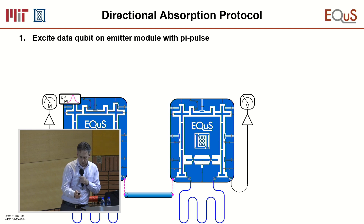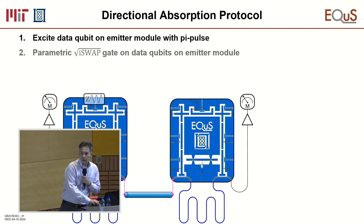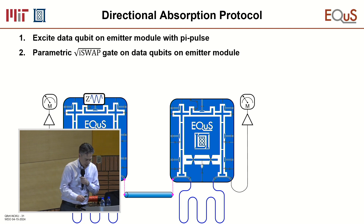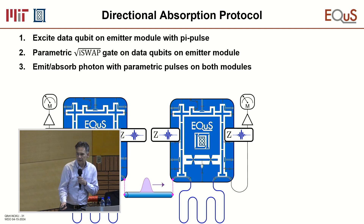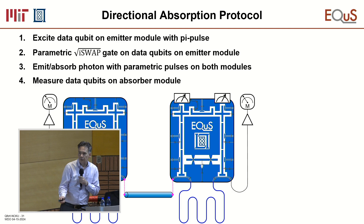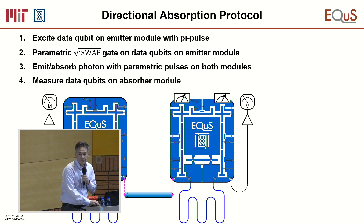The protocol on the creation side: we first excite one of the qubits, then create an iSWAP gate so those two qubits are entangled. At the next step, we simultaneously emit the photon to the waveguide and absorb it on the other side. We then measure these qubits to see if they got excited in the right way, and also look for photons that might have leaked out of the fridge.